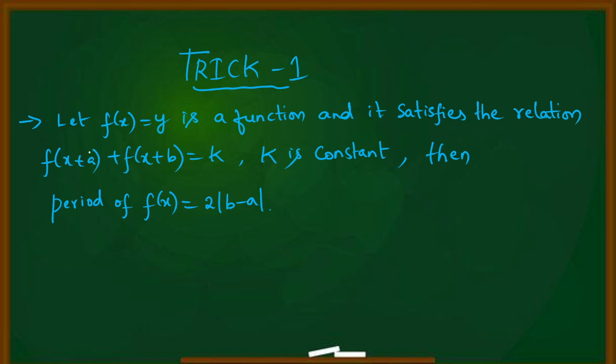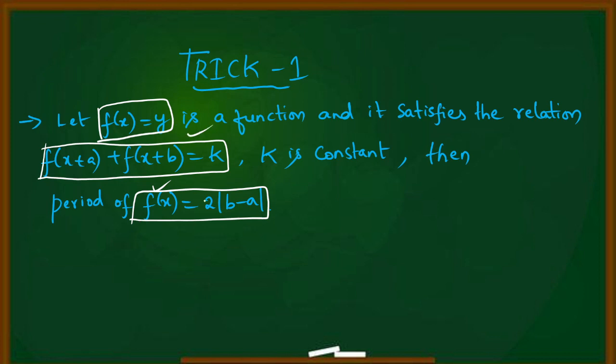Trick number 1 is a formula. Let f(x) = y is a function. It satisfies the relation f(x+a) + f(x+b) = k, where k is a constant. Then the period of f(x) is 2 times the modulus of b minus a. The period is 2|b-a|.